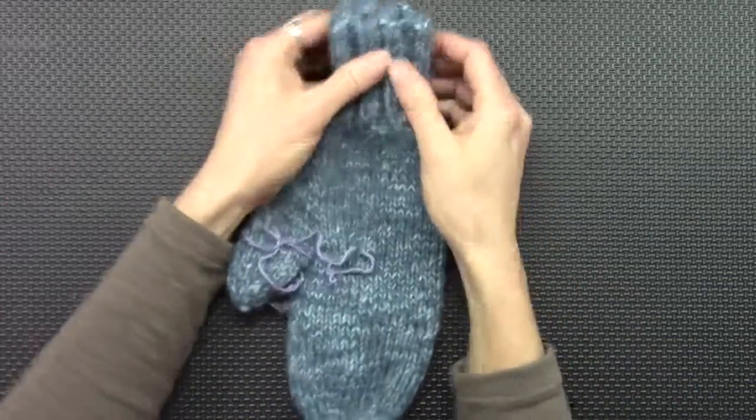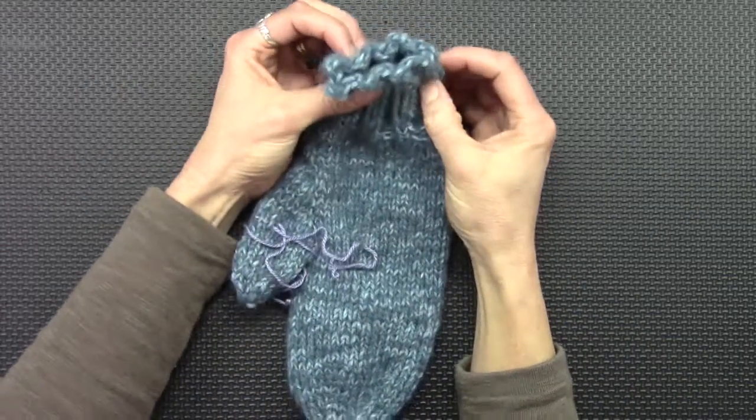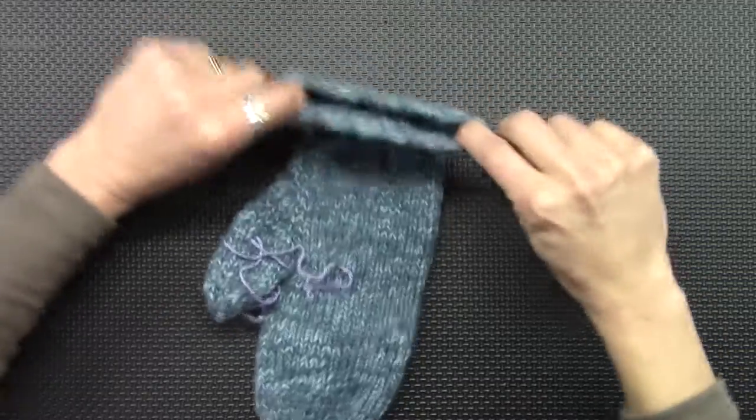The German Twisted Cast On. I'm suggesting the German Twisted Cast On because when you're doing something like a mitten or a toque, where your ribbing actually has to have give and stretch.